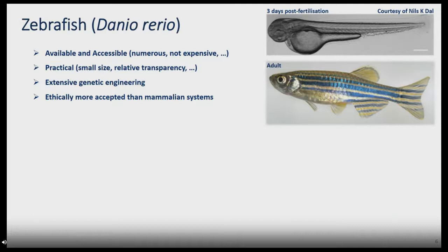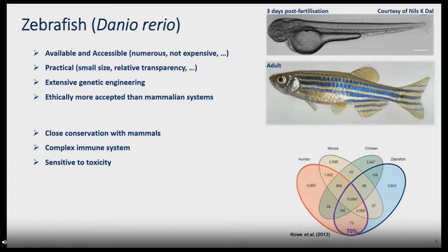The zebrafish is highly available, accessible, and incredibly practical because of its small size. The larvae are fully developed by day three and are transparent when you add a small drug. There are a lot of tools that have been developed, and it is particularly more accepted than mammalian systems in terms of ethics. The zebrafish also shows a high degree of conservation with mammals — 70% of human genes are orthologous in zebrafish.